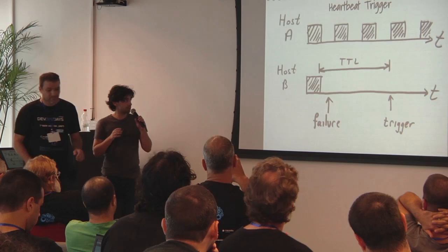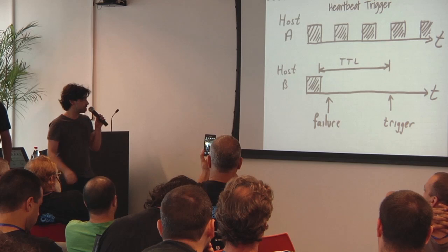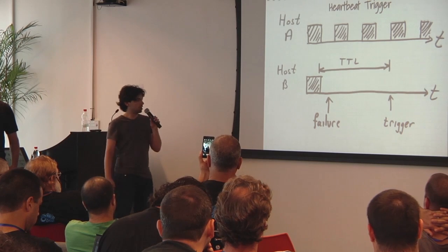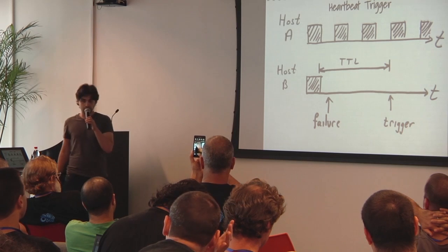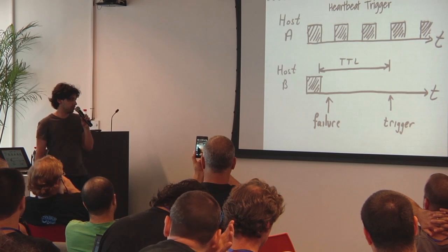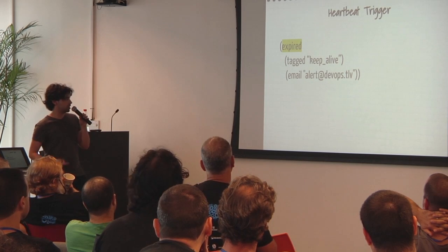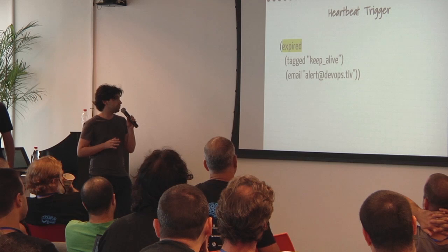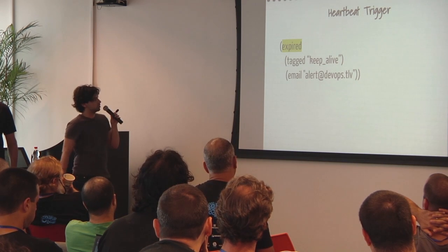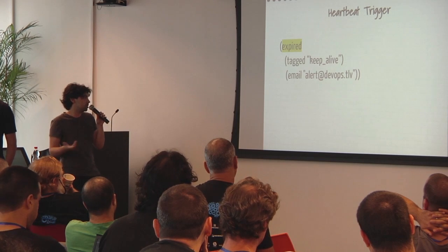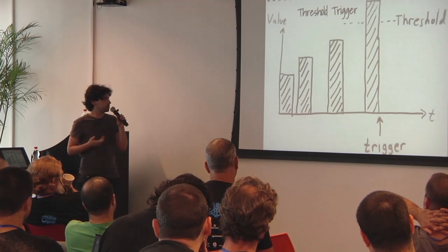The first use case is a simple liveness detection. We have two hosts that report heartbeat events periodically, and at some point host B crashes, which means its heartbeat stopped. Because every event has a time to live, this will trigger Riemann to take some action. When the event with tag keepalive expires, just send an email — 'expired' is a built-in function designed to inspect the time to live of an event.